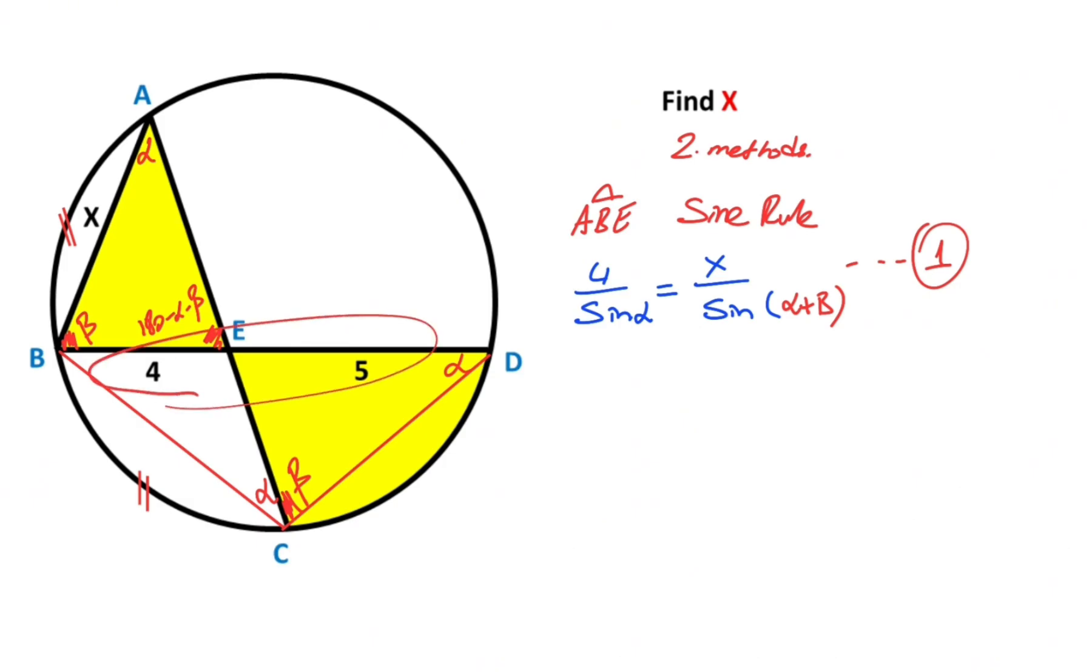We get 9 over sine of alpha plus beta equals x over sine alpha. This is the second equation.